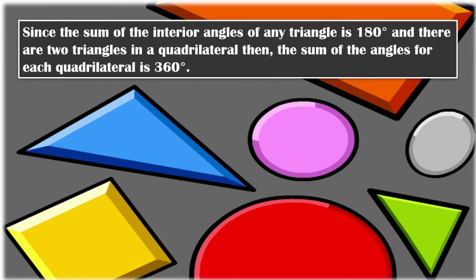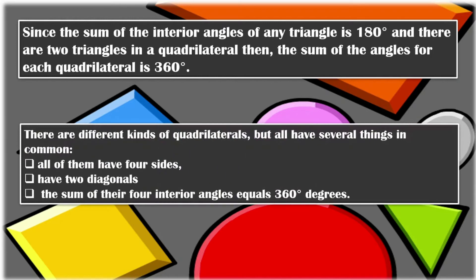Since the sum of the interior angles of any triangle is 180 degrees, and there are two triangles in a quadrilateral, the sum of angles for each quadrilateral is 360 degrees. So if a triangle's angle sum is 180 degrees, a quadrilateral is double that — two triangles — which is 360 degrees. There are different kinds of quadrilaterals, but all have four sides, and the sum of their four interior angles equals 360 degrees.